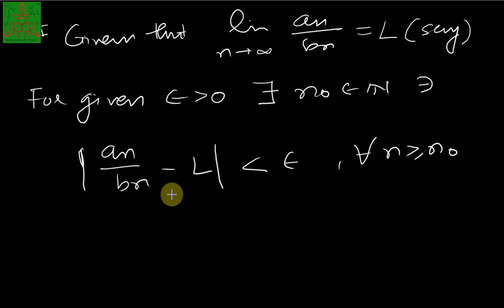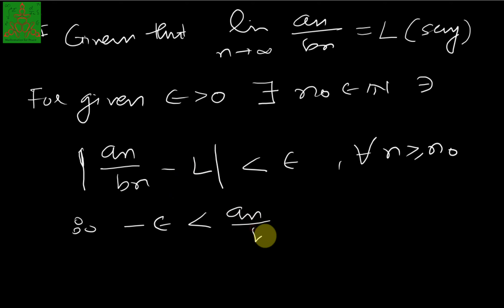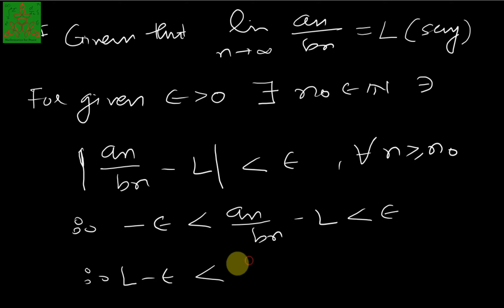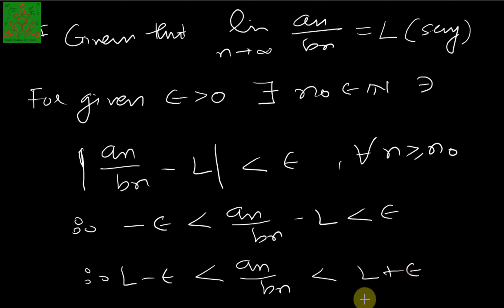If I expand this modulus, we can write: −epsilon < An/Bn − L < epsilon. Adding L to both sides gives L − epsilon < An/Bn < L + epsilon, for every n greater than or equal to N₀. This holds when the limit of An upon Bn exists and is a positive number, and it is true for any given epsilon.